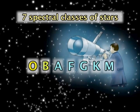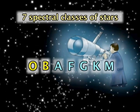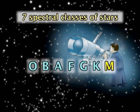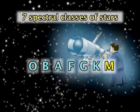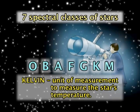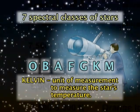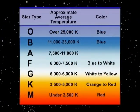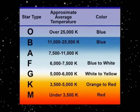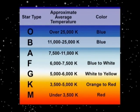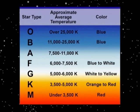O and B stars are uncommon, but they are the hottest and brightest stars. M stars are common, but the least hot and least bright. Kelvin is the unit of measurement used to measure the stars' temperature. O stars, which have a blue color, are the hottest stars with an average surface temperature of over 25,000 Kelvin. Next are the B stars, which have temperatures of 11,000 to 25,000 Kelvin.